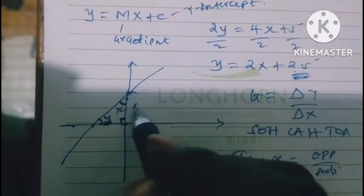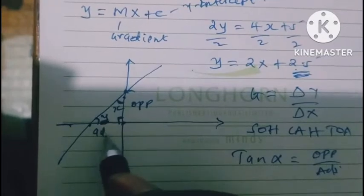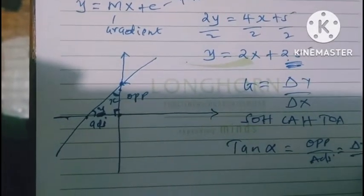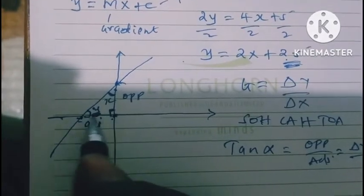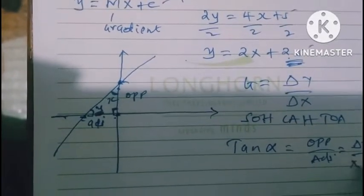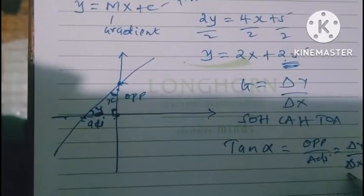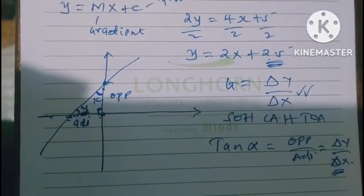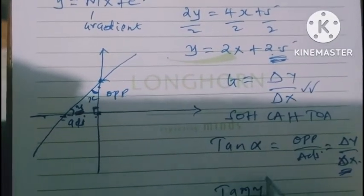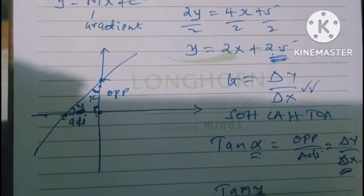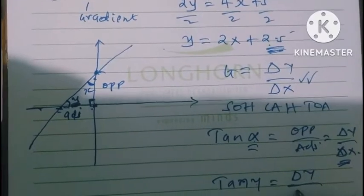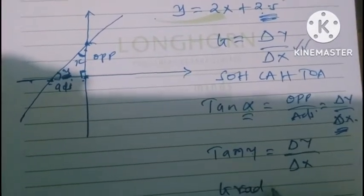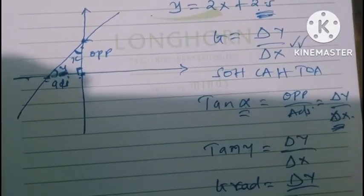then as per this angle y, this side is our opposite and this side is our adjacent, which is actually, opposite is as good as change in y, so opposite is as good as change in y over adjacent, which is as good as the change that happened in the x-axis. So, change in x-axis, so you realize that now, this change in y over a change in x is as good as gradient. So, in short, tan y is as good as change in y over a change in x. And gradient is also change in y over a change in x.